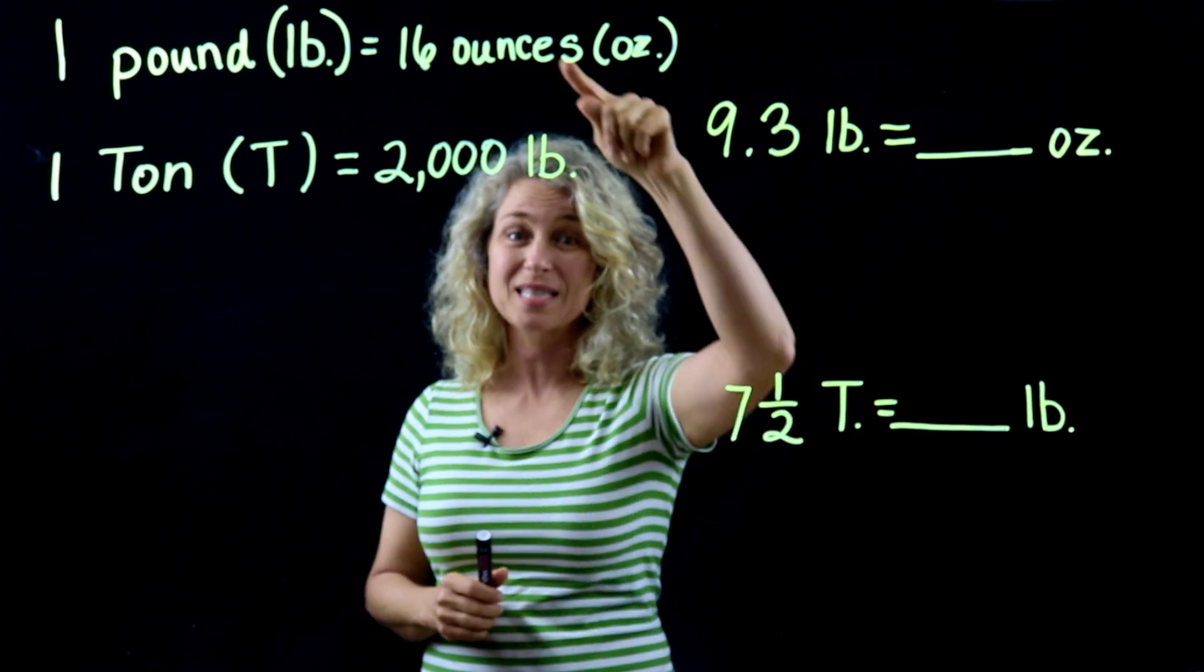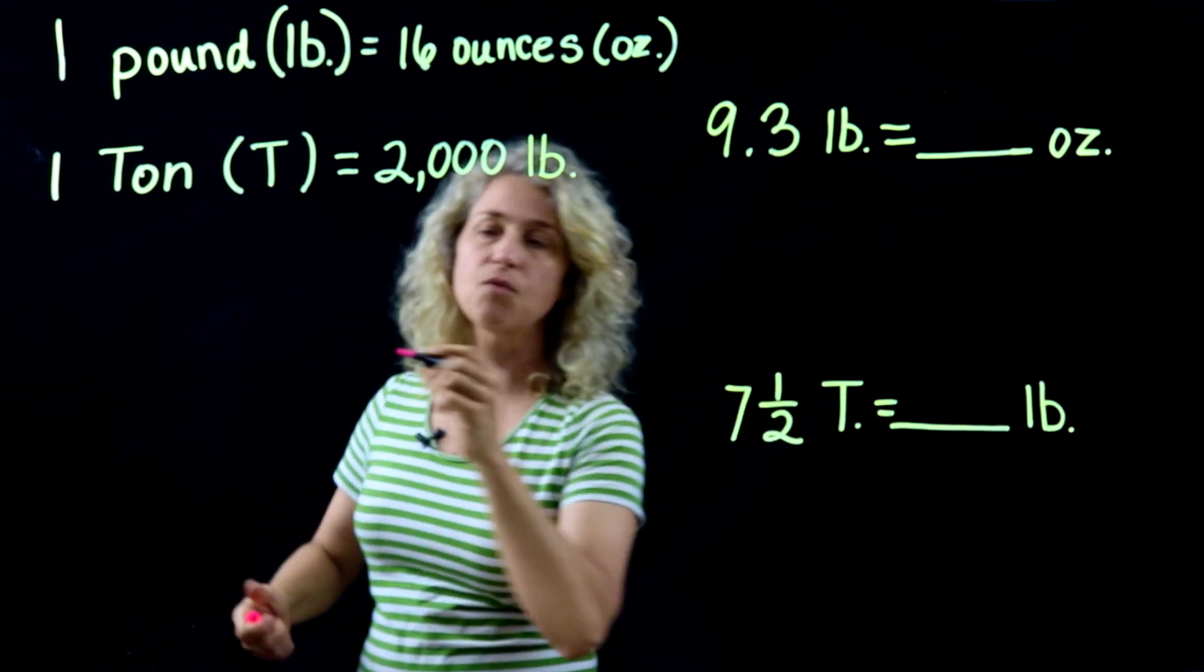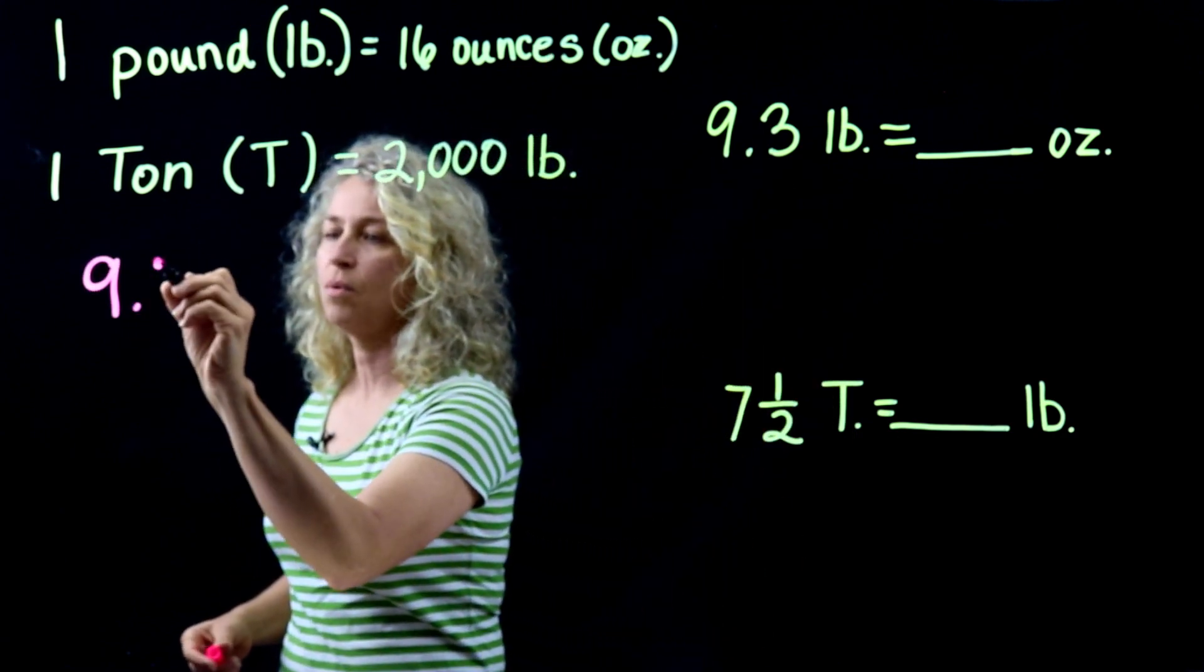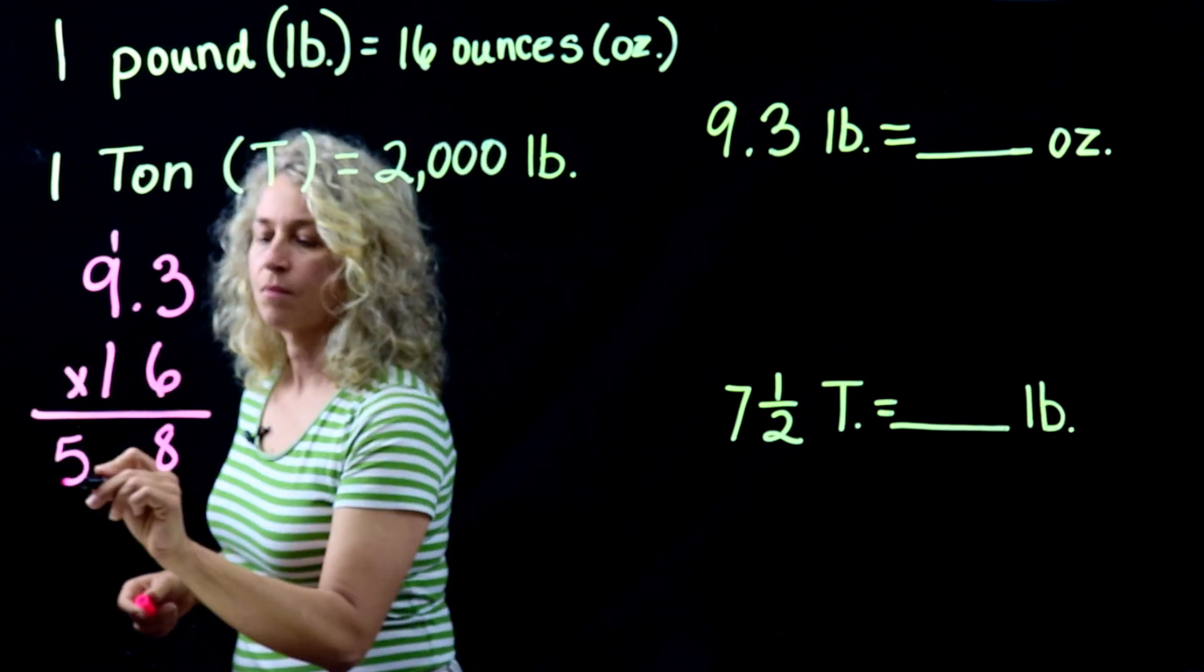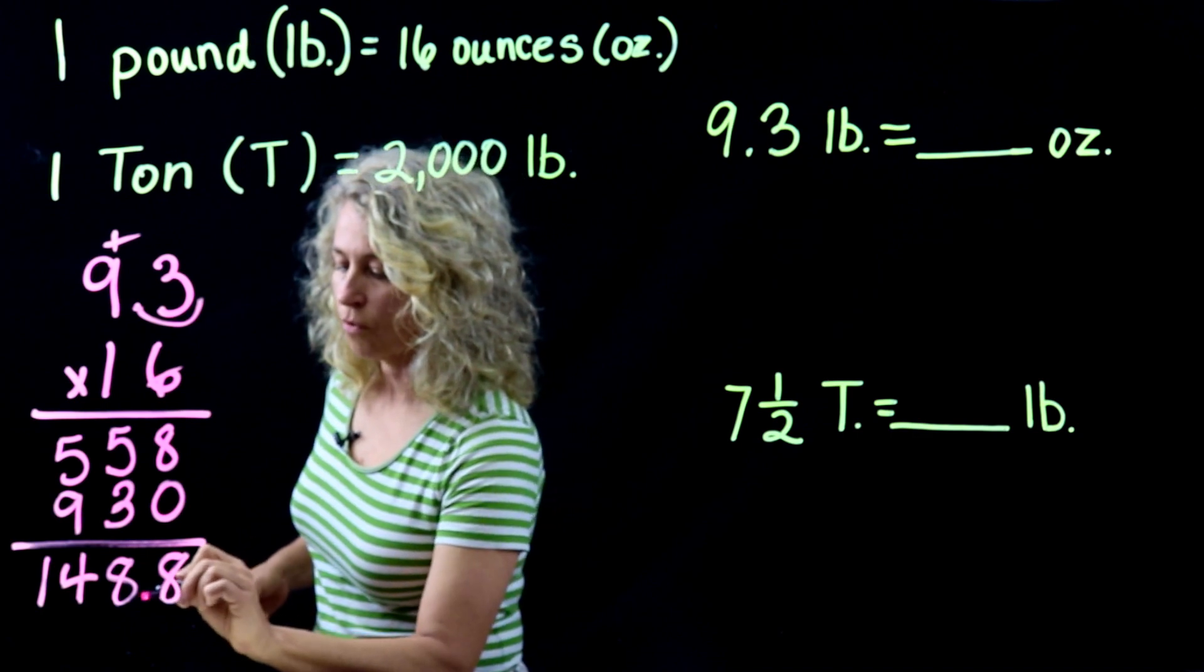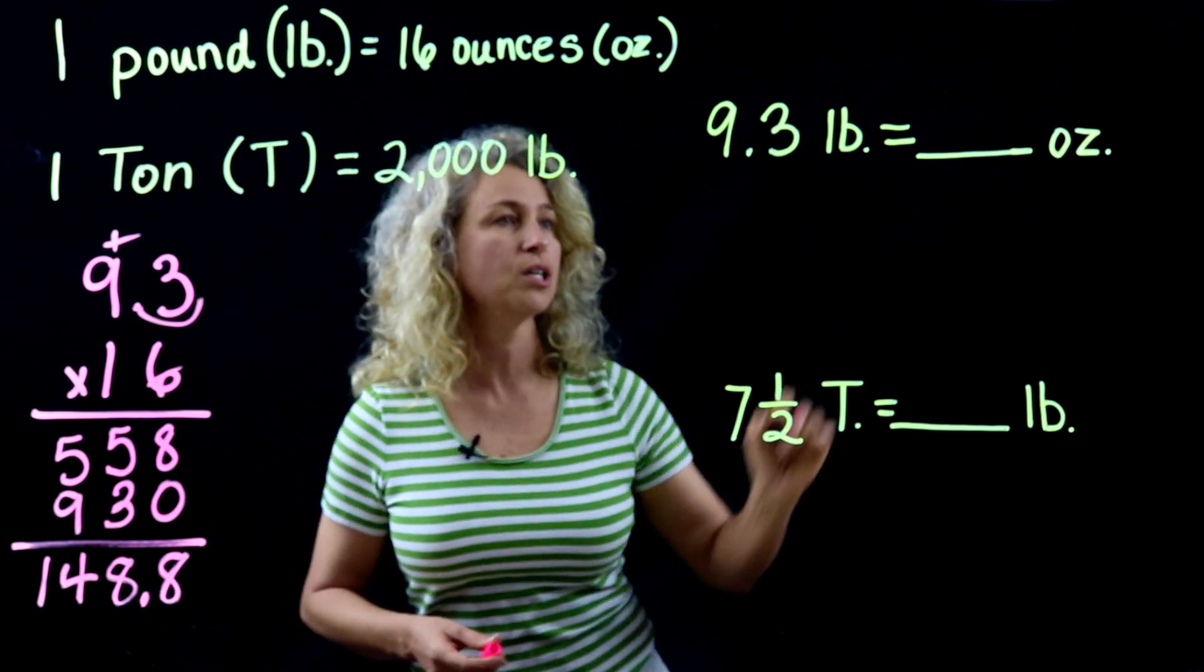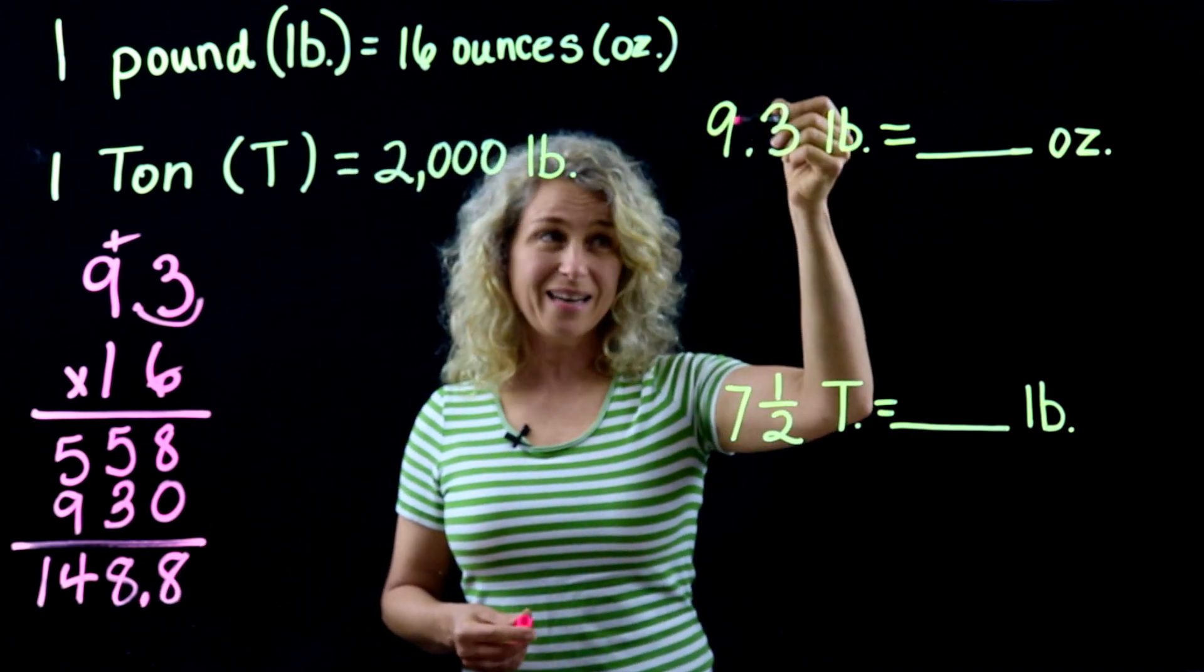I'm going to go over here to the side: 9.3, and we're going to multiply it times 16. So we multiply, and then we count over one decimal place. So in 9 and 3 tenths pounds there are 148.8 ounces.